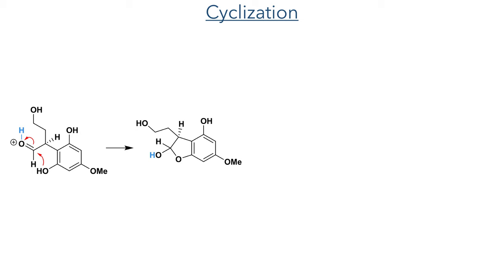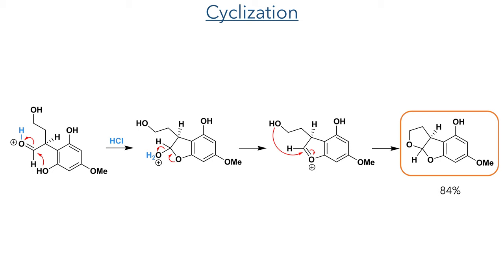The resulting hemiacetal is further protonated and eliminates water. The electrophilic intermediate is once again attacked by an alcohol group, in this case the primary alkyl alcohol. This cyclization formed the tricyclic fragment in an 84% yield.